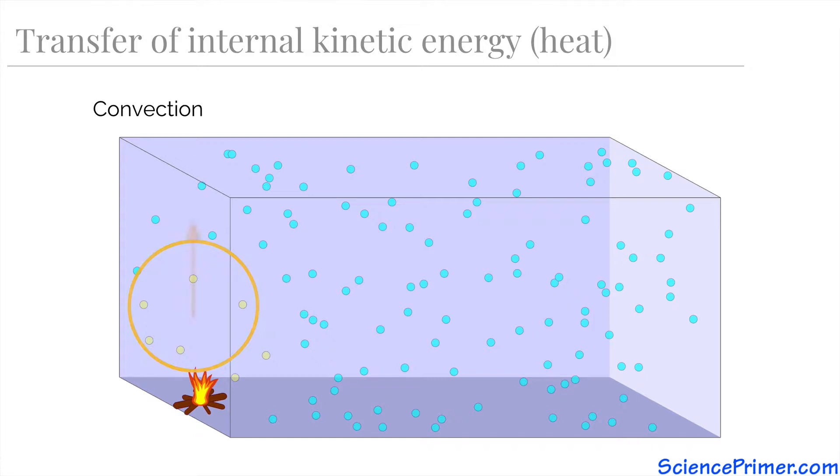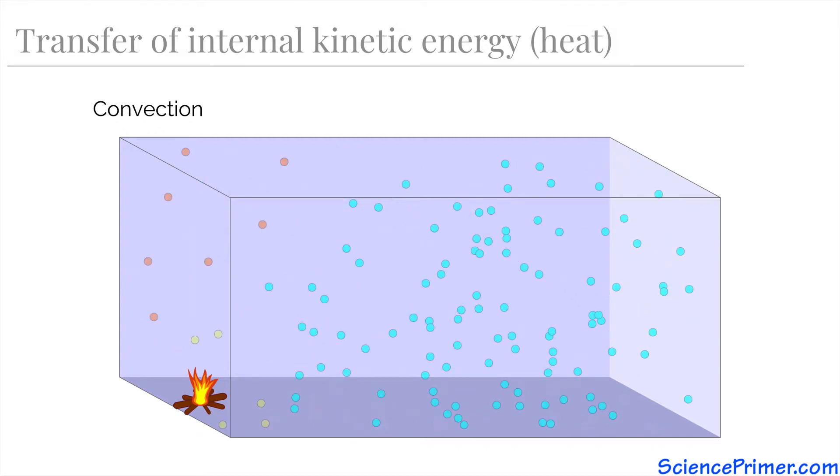This lower density causes that gas to rise up and away from the heat source. As it rises and takes more space, this gas pushes higher density, that is cooler molecules of gas, out of the way.